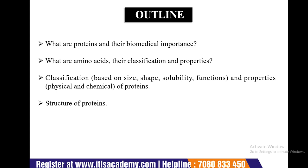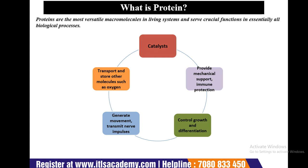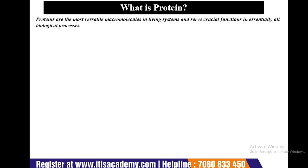Starting with a basic introduction: in 1839, Dutch chemist Gerardus Johannes Mulder, while investigating substances found in milk and egg that could be coagulated when heated, found certain nitrogenous compounds. The Swedish scientist J.J. Berzelius suggested to Mulder that these substances should be called proteins, and the term is derived from the Greek word 'proteios' which means primary or holding first place.